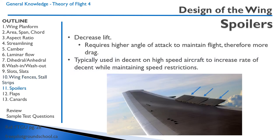Many high-performance, low-drag aircraft have spoilers. Spoilers decrease lift and create more drag. Because lift is decreased, you have to raise the nose to a higher angle of attack, which also increases drag. They're used on high-speed aircraft to increase the rate of descent while maintaining speed restrictions. On jets, air traffic control will often say descend right away but not to exceed 250 knots, so pilots pull out their speed brakes — which are the same thing as spoilers.